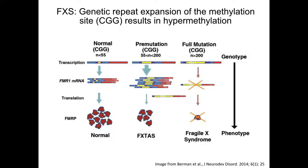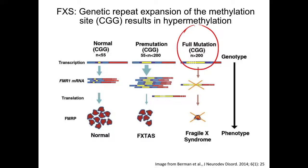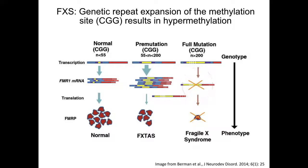In Fragile X syndrome, there is a repeated section of DNA in the FMR1 gene that consists of CGGs. Normally, this gene has less than 55 CGG repeats, but in Fragile X syndrome there are over 200 CGG repeats. CGG repeats are prime sites for methylation to occur. Thus, the consequence of this expanded CGG repeat section is hypermethylation of the FMR1 gene, preventing any gene transcription from occurring and ultimately preventing any protein translation.